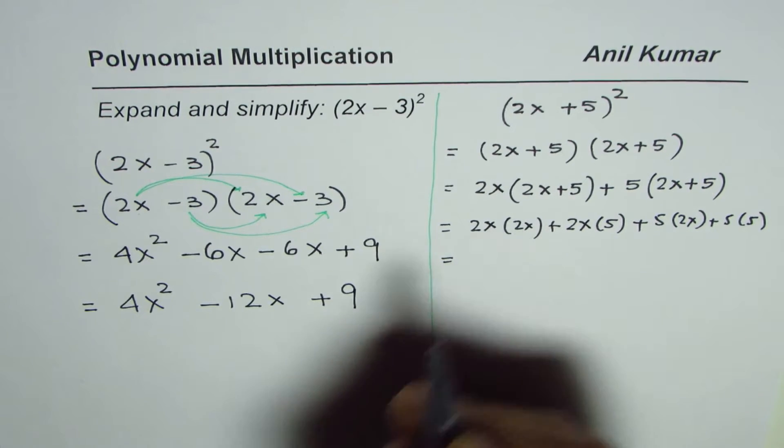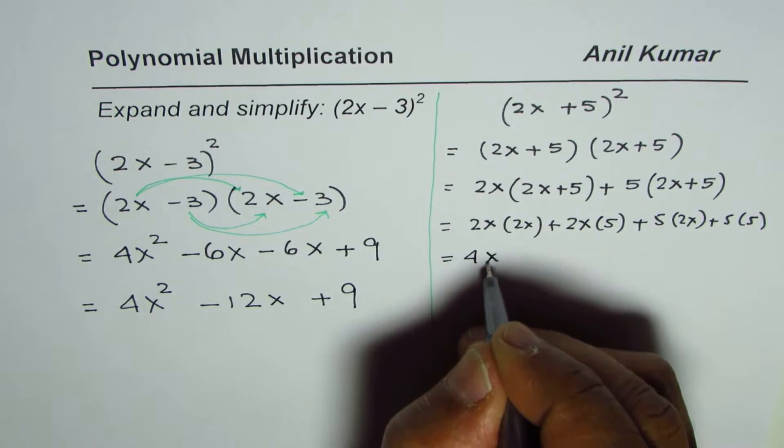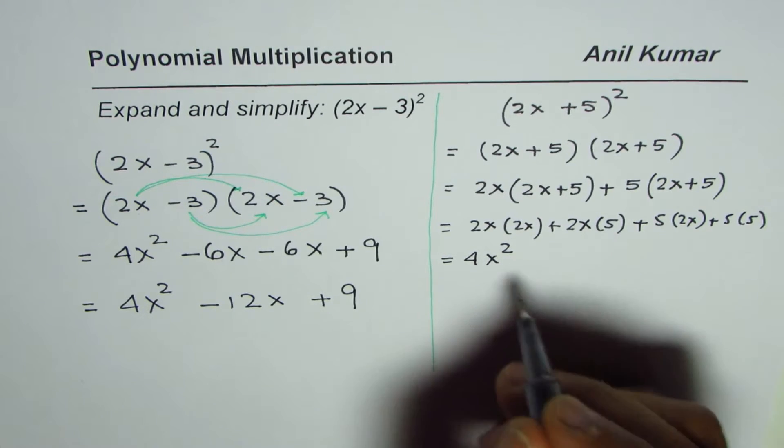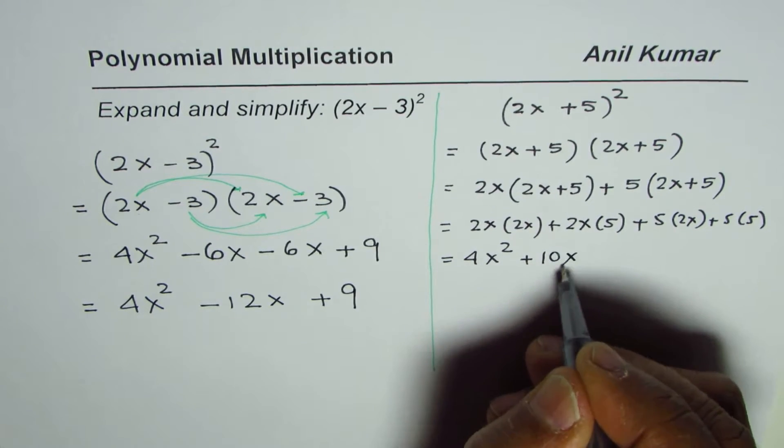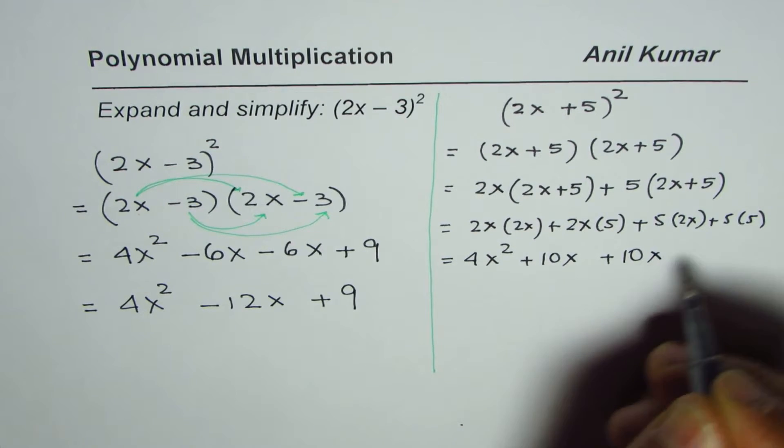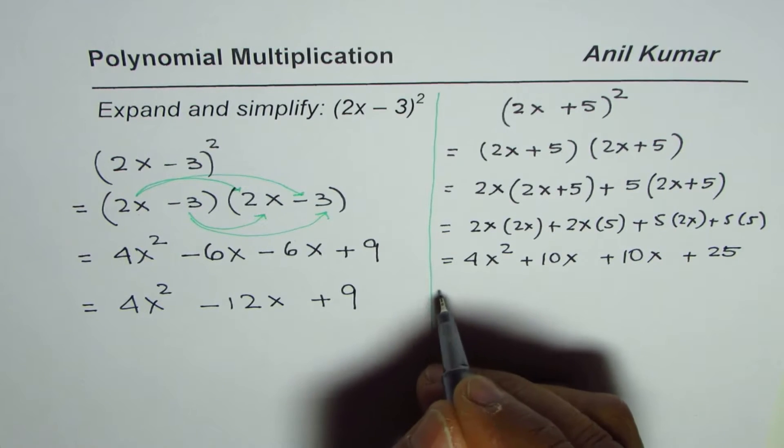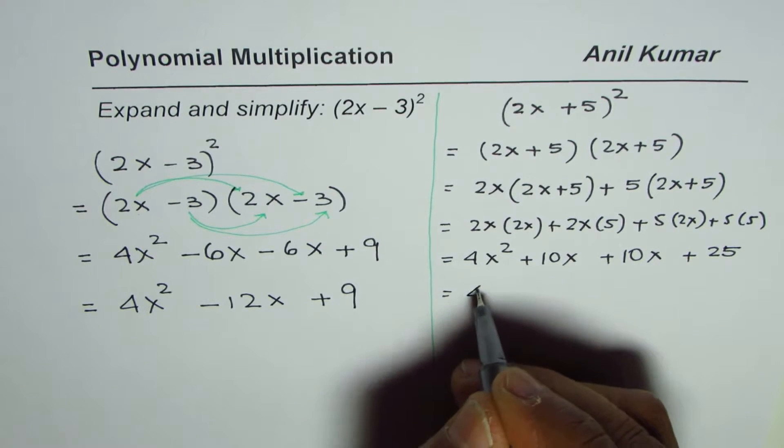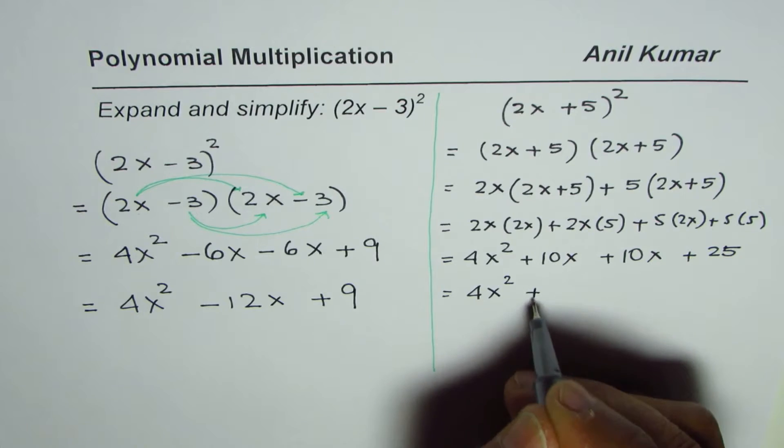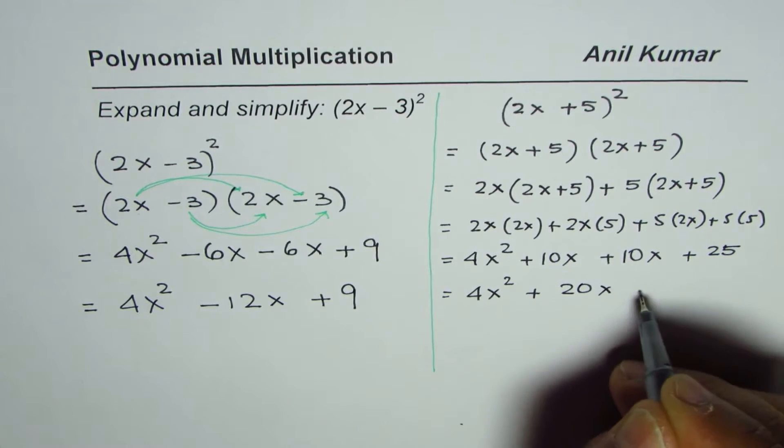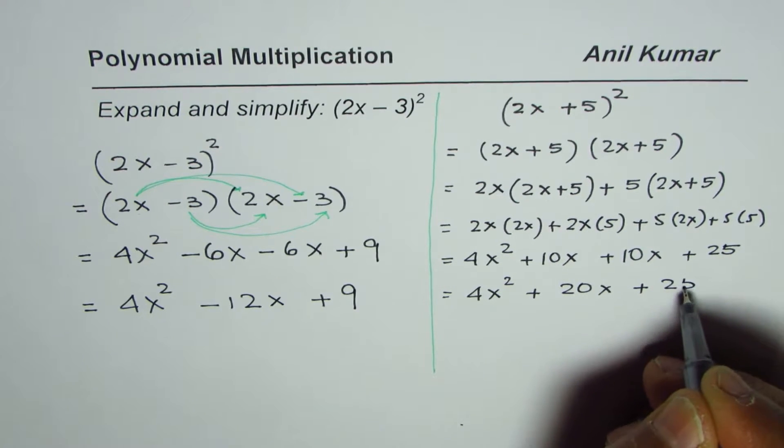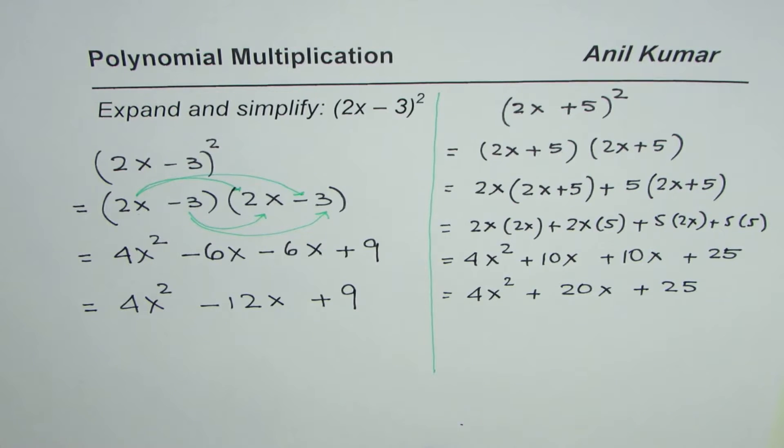So 2x times 2x is 4x². 2 times 5 is 10. We get 10x. 5 times 2 is 10. We get 10x. 5 times 5 is 25. So combine the like terms. We have 4x² + 20x + 25.